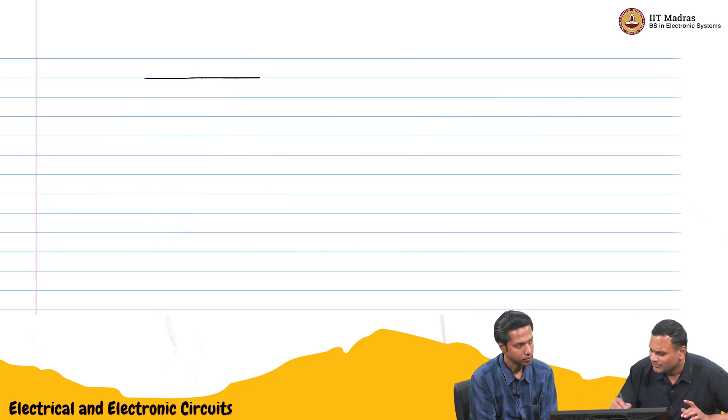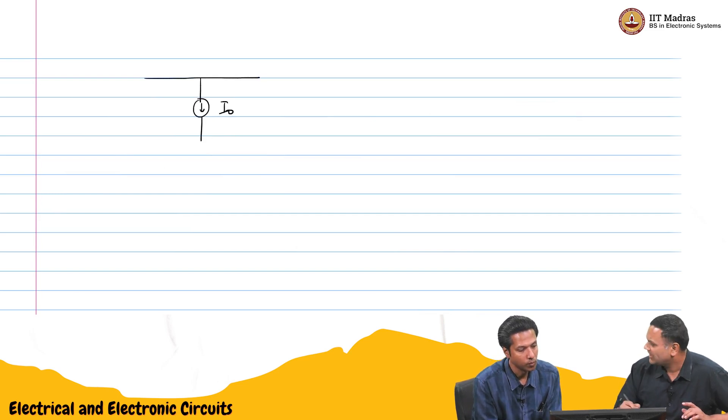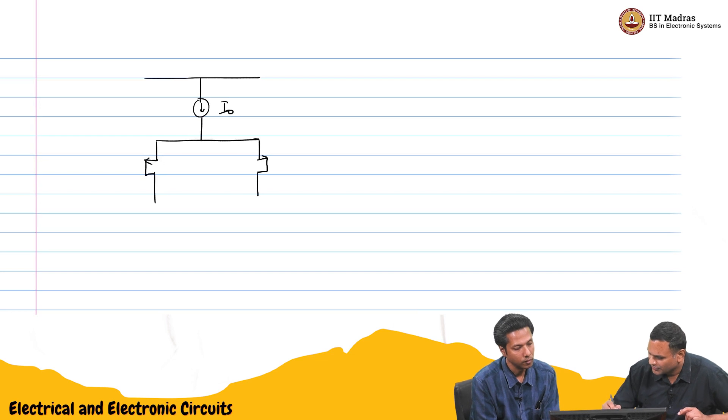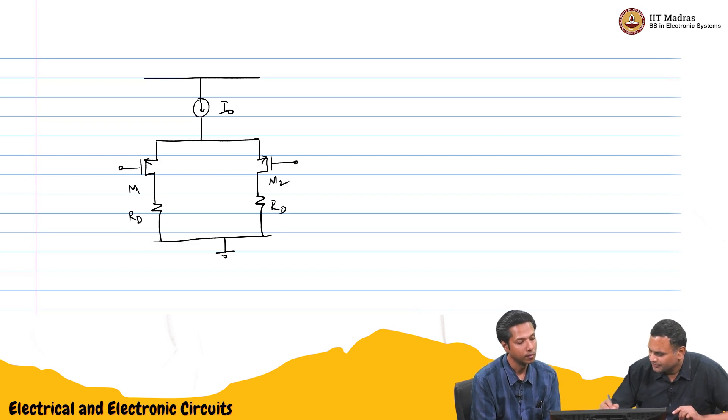So, you will have a bias current I naught. So, you will now have to. PMOS transistors and you will have two resistors to ground. So, you will have M1, M2, Rd, Rd. M1 and M2 should be identical. You will have two bias I naught by 2 and I naught by 2 will be the bias currents. So, this is Vdd and this will be Vdc plus Vid by 2. This will be Vdc minus Vid by 2 and the outputs will be taken across here.